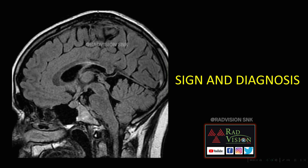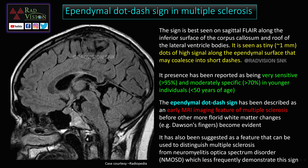Next case — you can pause the slide and guess the sign and diagnosis. This is called the ependymal dot-dash sign in multiple sclerosis. On sagittal FLAIR images, you can see multiple hyperintense tiny dots of nearly 1 mm that sometimes coalesce to form a line, classically seen along the ependymal surface of the ventricle. This sign is very sensitive — greater than 95% — and moderately specific — greater than 70% — predominantly seen in individuals younger than 50 years of age.